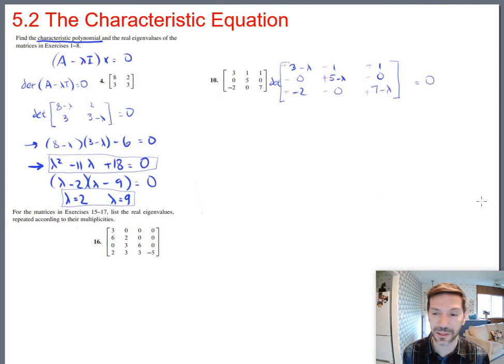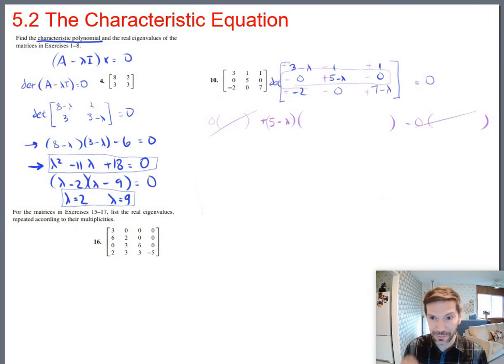Then you can pick any row or any column you want to expand along to get your determinant. A good choice to me seems like the second row because of those two zeros. So technically the determinant would have 0 times some stuff, but we don't care about that. Plus 5 minus lambda times some stuff that we do have to care about. Two terms are zeroed out, which is the whole reason we picked that row. But we do need to do 5 minus lambda times the 2 by 2 determinant that's left from crossing out that row in that column. So that would be 3 minus lambda times 7 minus lambda minus negative 2, so plus 2.